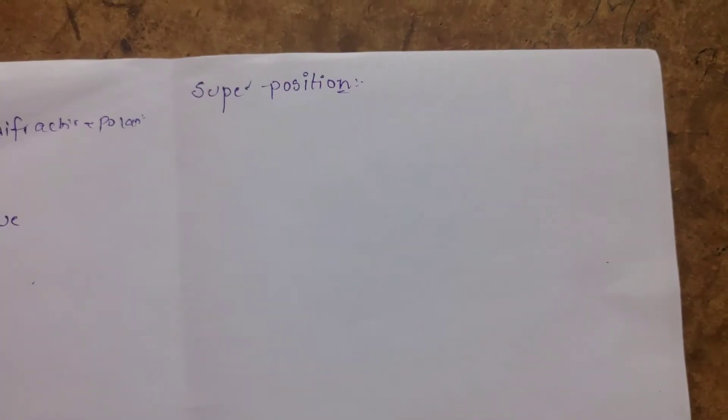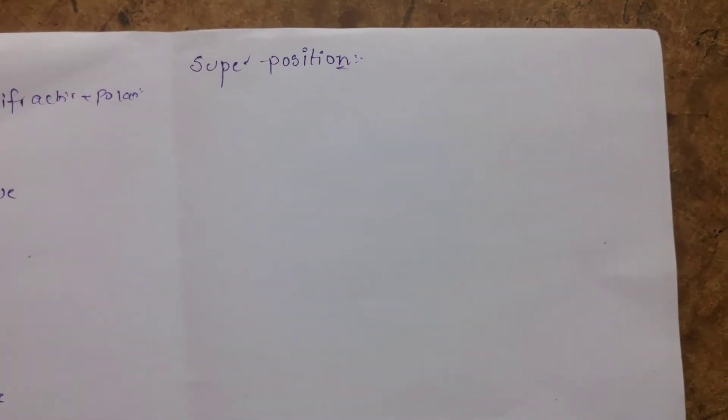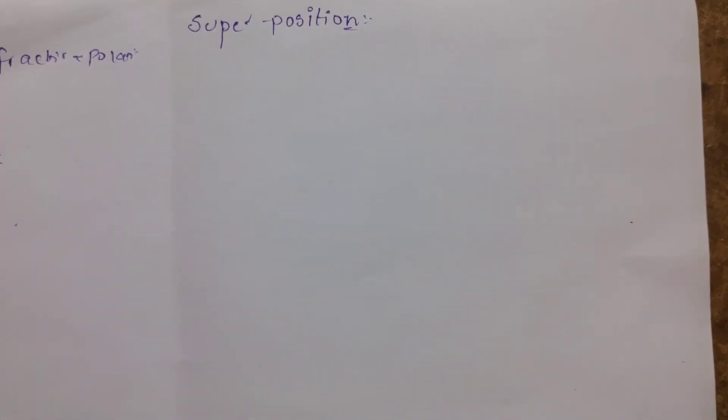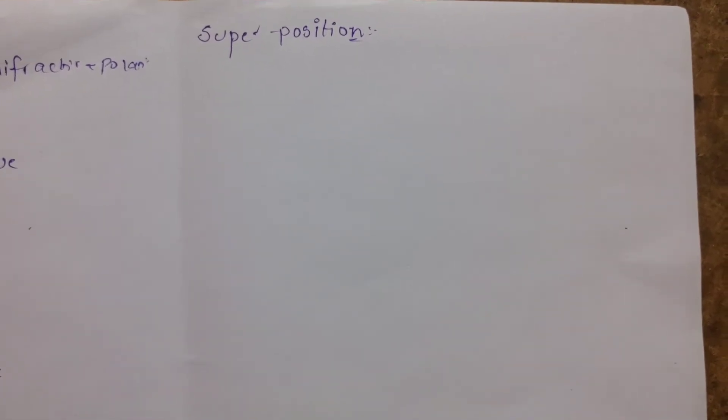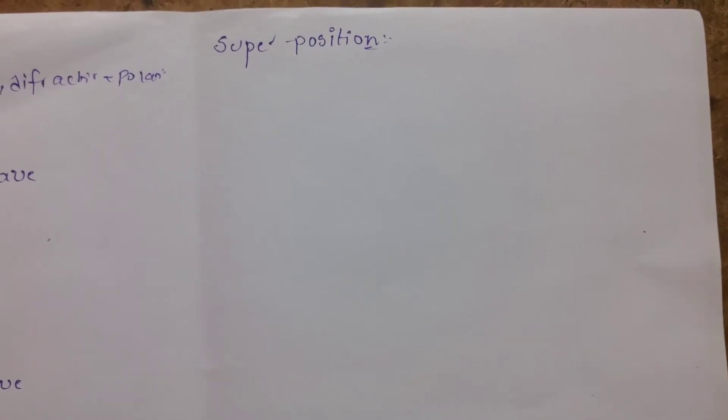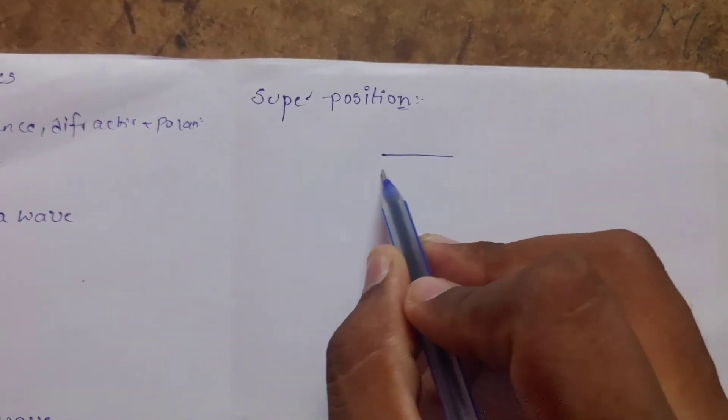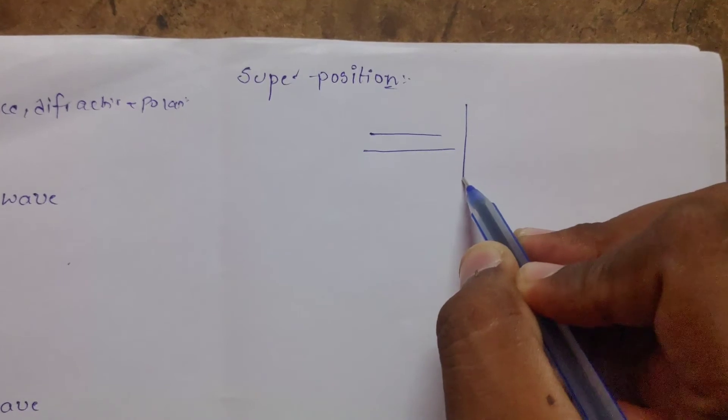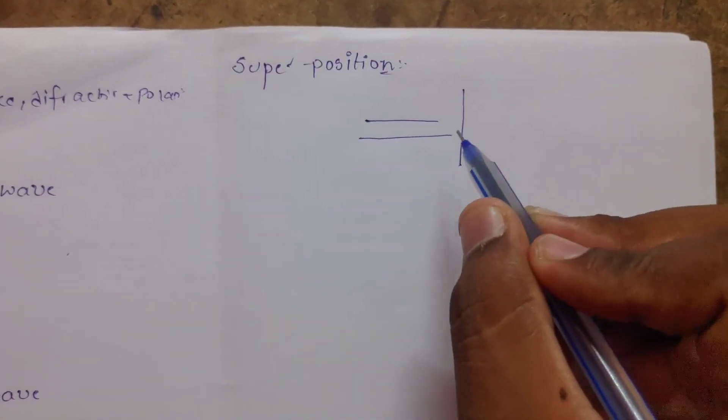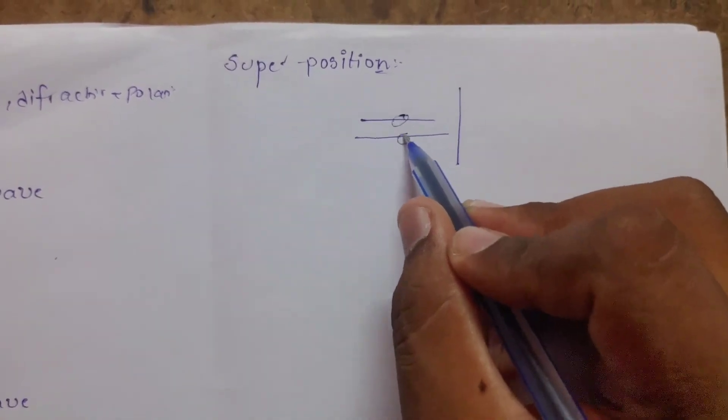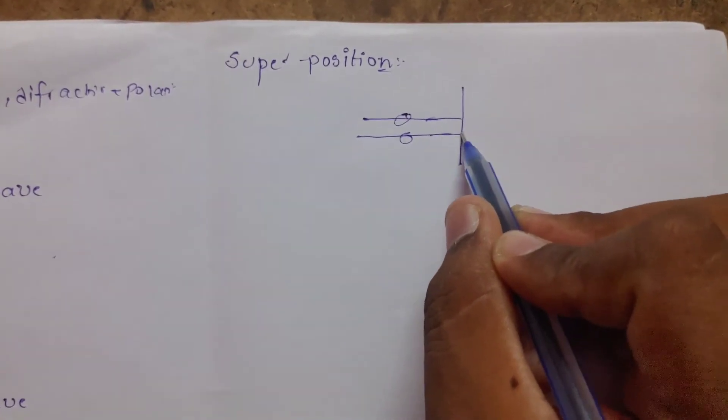For interference, the first important property is the principle of superposition of waves. When two waves in a medium challenge each other, the resultant displacement of the waves is the algebraic sum of its individual displacements.